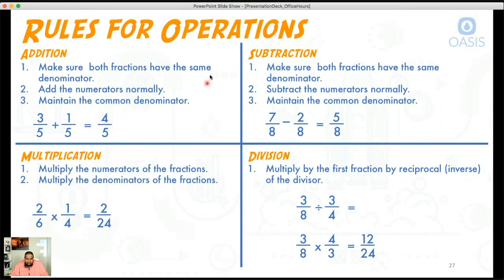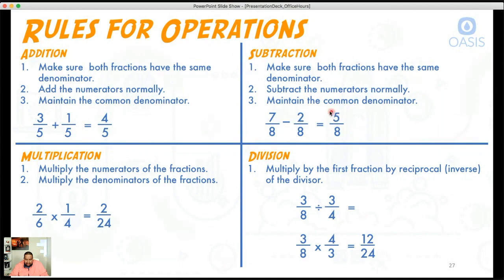Now subtraction — same thing. We want to make sure that both fractions have the same denominator, which they do — they're both eight. Then step two: subtract the numerators normally. So seven minus two, you get five. And then step three says you maintain the denominator. So the answer to this operation is five over eight.